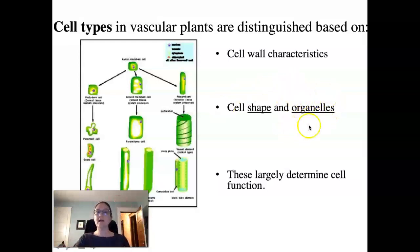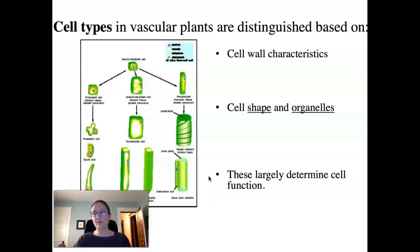And whether it has active organelles like plastids and a nucleus. And then also of course cells are distinguished based on their function. So for each of the cell types that we're going to talk about over the next couple of days, we're going to talk about their cell walls, their shape, whether or not they have organelles, and of course what function they have.